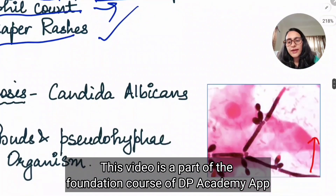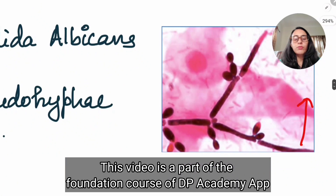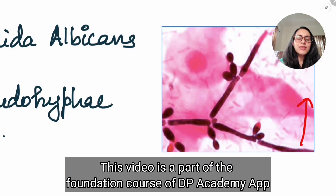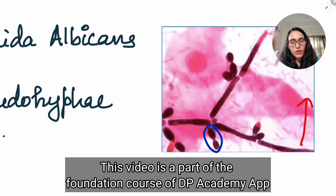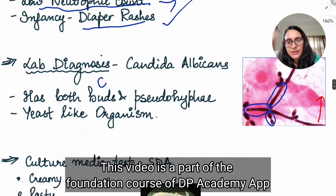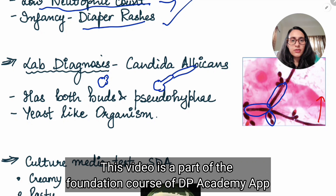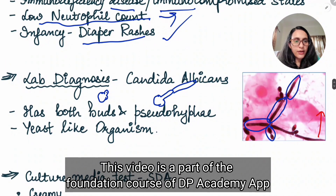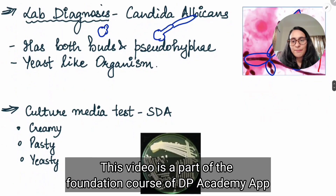How do you diagnose Candida albicans? We know it has both buds and pseudo hyphae because it is a yeast-like organism. Under the microscope, you find buds — small round structures — and you can easily appreciate the long pseudo hyphae. This is how you identify it as a yeast-like organism.